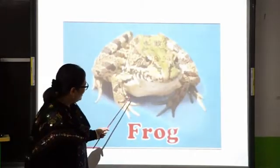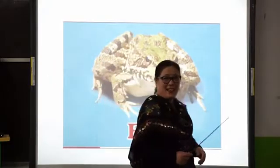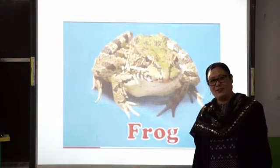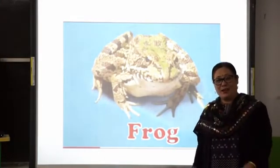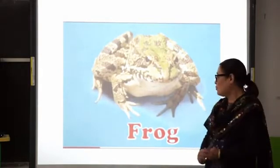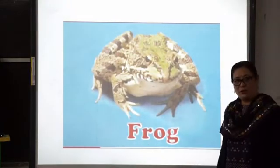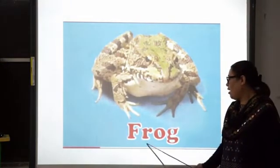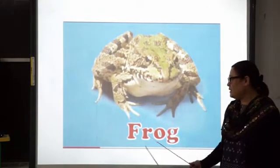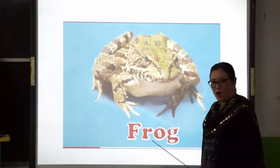Then next, what is this, children? This is a frog. Have you seen a frog? Have you seen a frog jumping? It jumps like this. F-R-O-G, frog. What is this? This is a frog. F-R-O-G, frog.